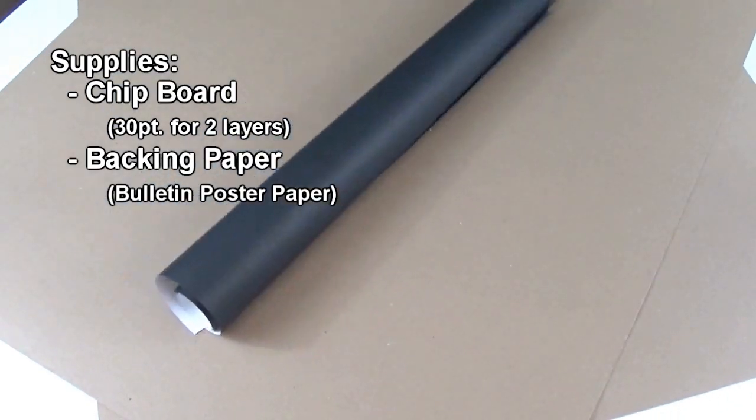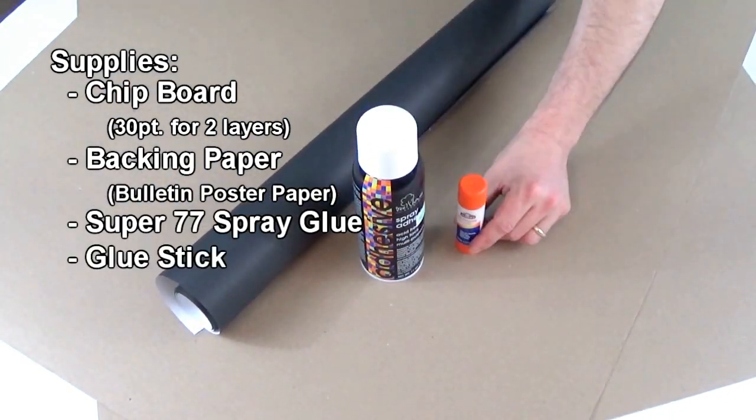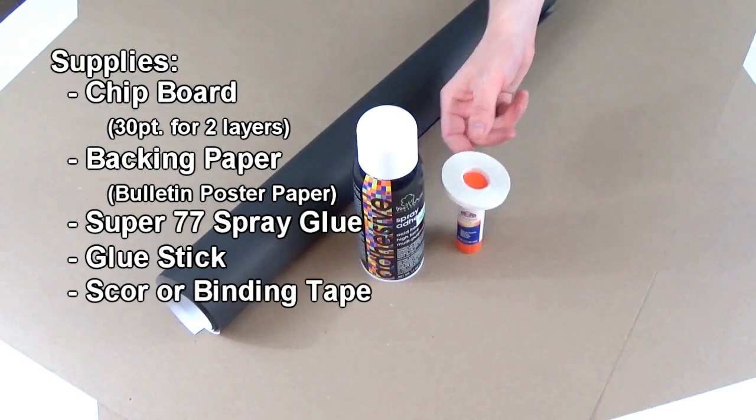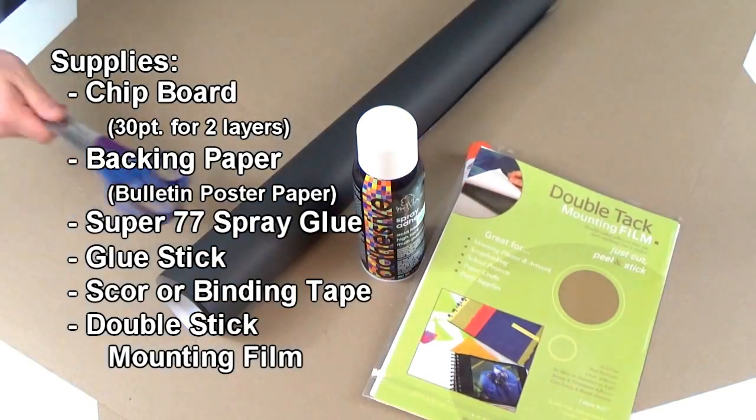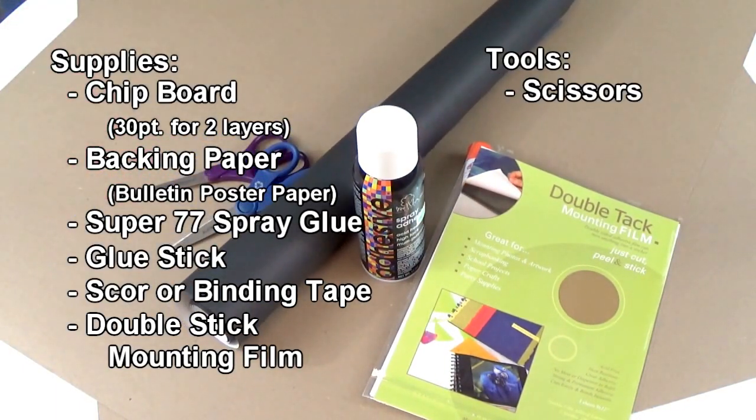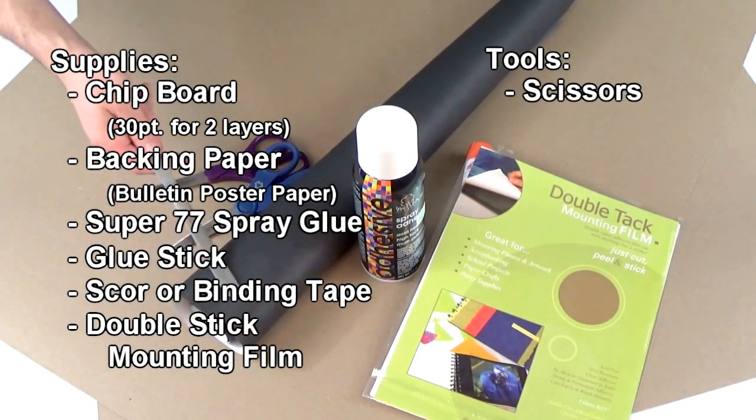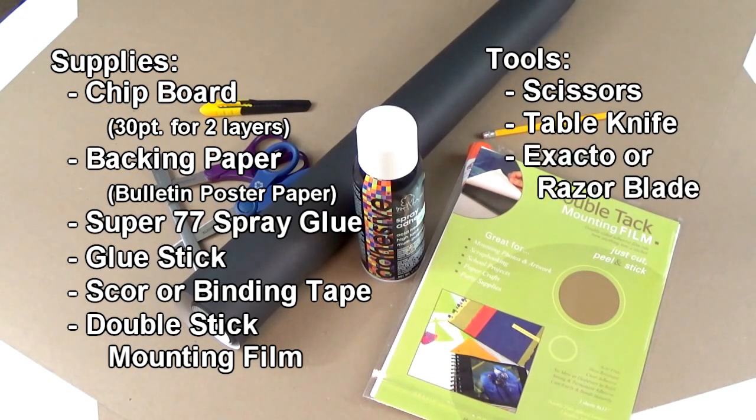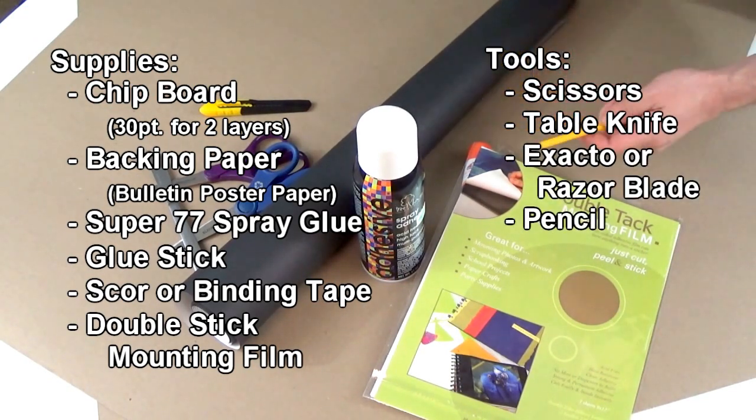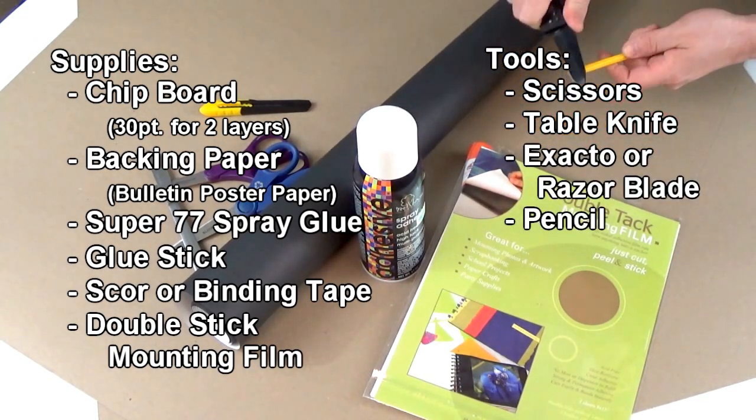Supply list. Buckle in for a long one. We'll need enough chipboard to make two layers of your game board, the old backing paper, spray glue, and a glue stick or two. Scoring tape and the double-sided permanent mounting film we use when making tokens and tiles. For tools, I got a good pair of scissors and a not-so-good pair for the adhesive paper. We'll use a table knife for today's scoring methods and introducing our first time to use an X-Acto knife or a razor blade.